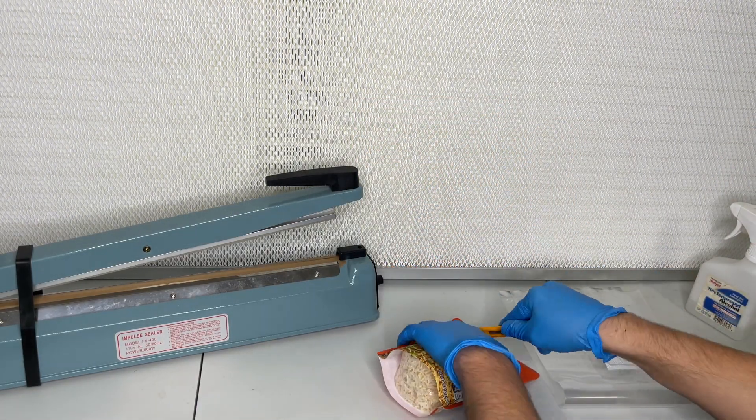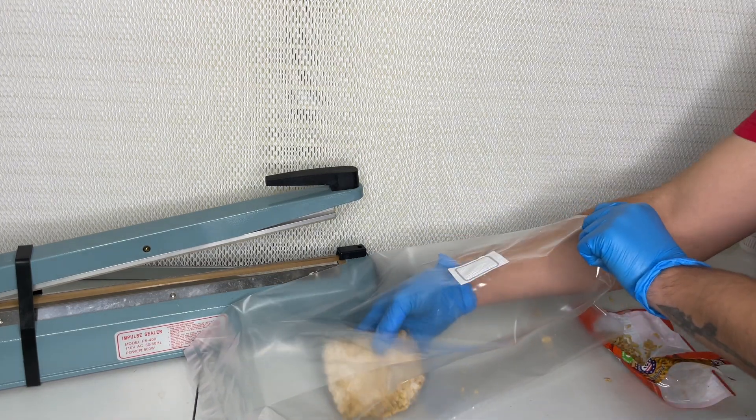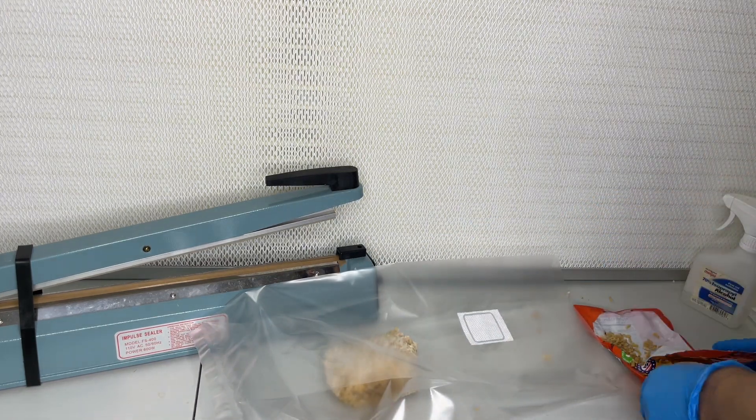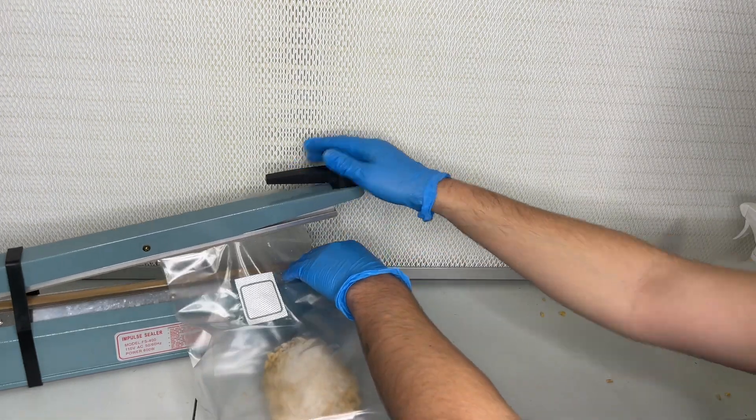After about 20 days of colonizing at 78 degrees Fahrenheit the rice cake is removed and placed inside of a filter patch bag. I use an impulse sealer to seal the bag.